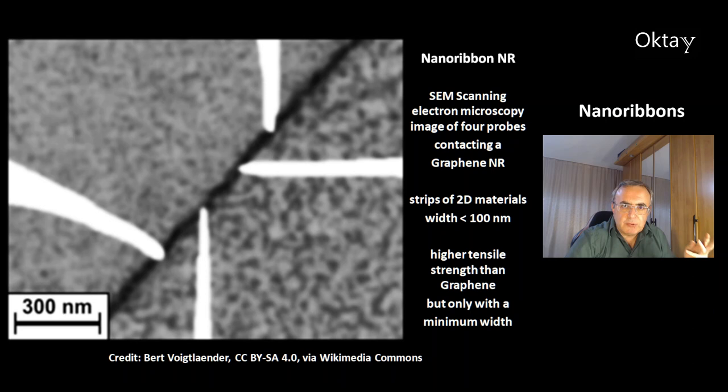Nanoribbons are strips of 2D materials with a width below 100 nanometers. They have a higher tensile strength than graphene, but for that they have to have a minimum width.